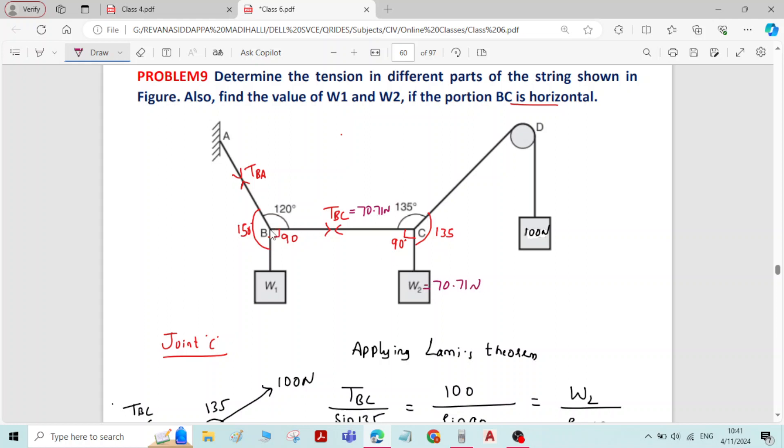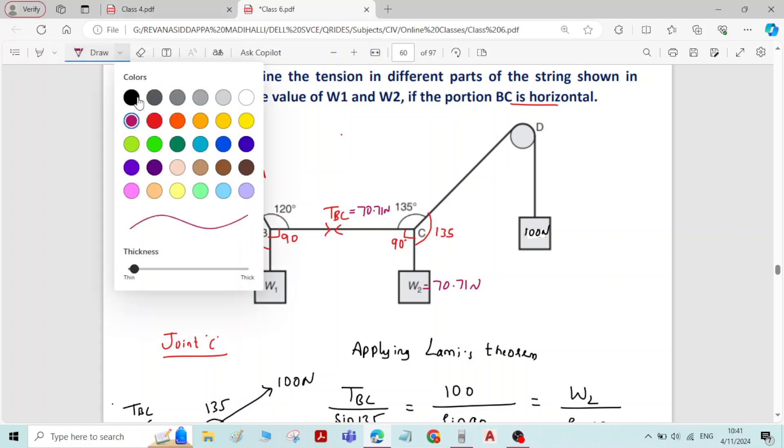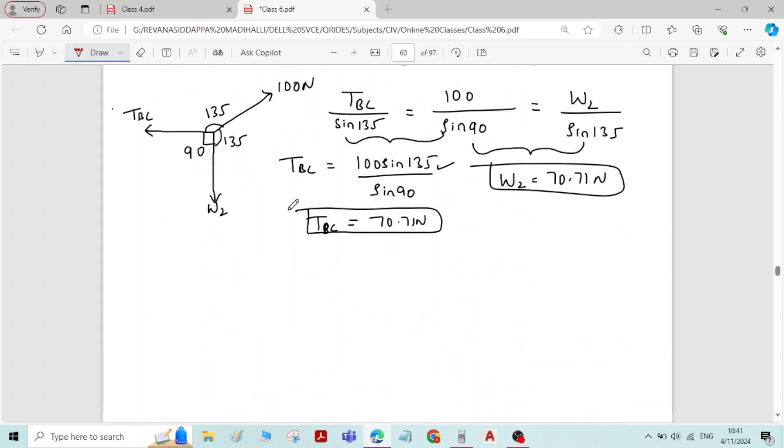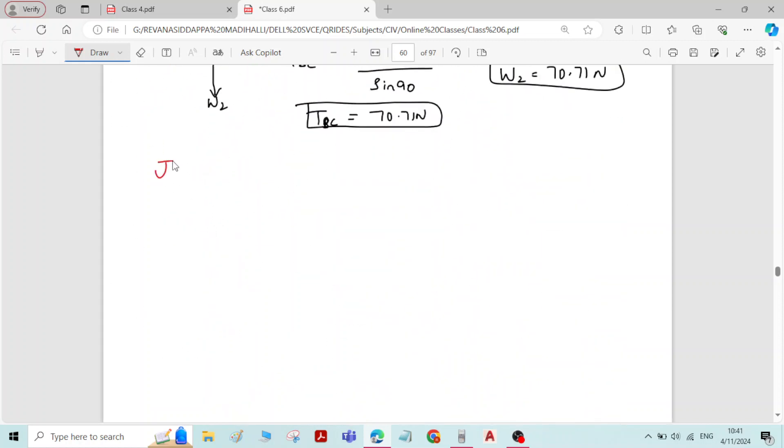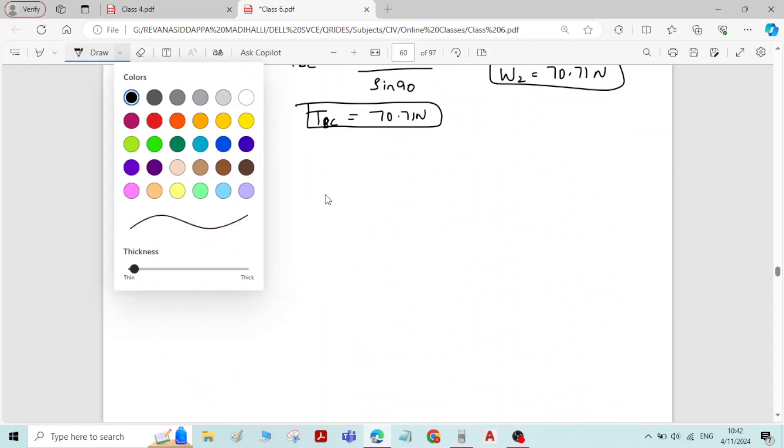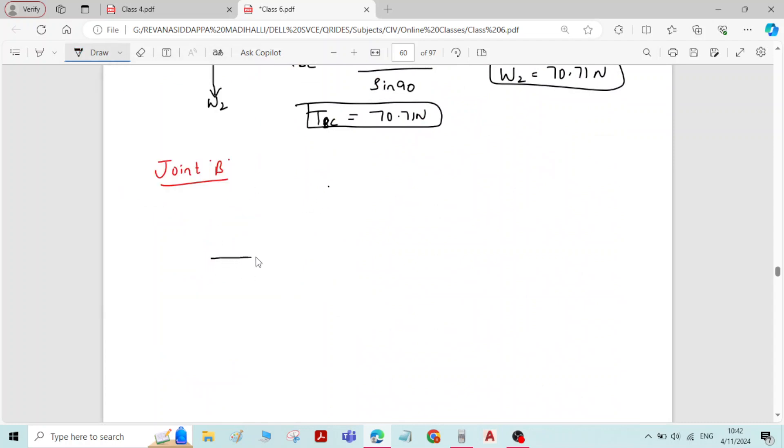Now you can select joint B. At joint B only two unknowns now: force in member BA and W1. Force in member BC already we have determined, that is 70.71 Newton. Now consider joint B. I will write the figure of joint B alone.